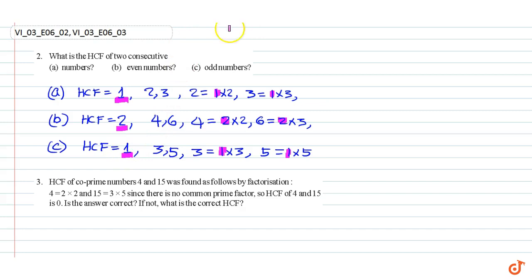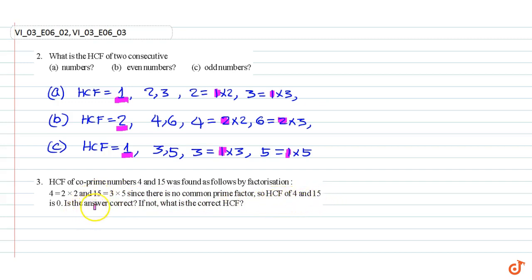Question number three: HCF of two co-prime numbers four and fifteen was found as follows by factorization. Four is equal to two into two, fifteen is equal to three into five. Since there is no common prime factor, the HCF of four and fifteen is zero. Is the answer correct? If not, what is the correct HCF?